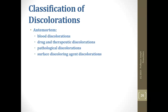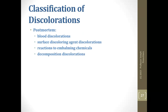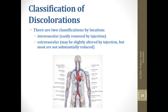Time configurations: ante-mortem means you are alive; post-mortem means you are dead. Ante-mortem discolorations most commonly found include blood discolorations, therapeutic, pathological, and surface discoloring agents — for example, wiping iodine on the body turns the skin yellow. Post-mortem adds surface discoloring agents like blood and reactions to embalming chemicals. Location: intravascular discolorations are easily removed because they are in the vascular pipes; extravascular ones — we might influence some, but we're certainly not going to get rid of all of them.